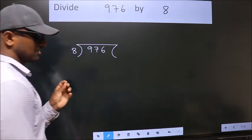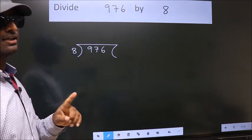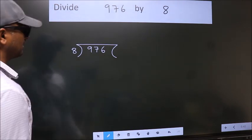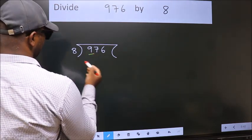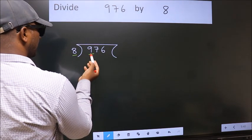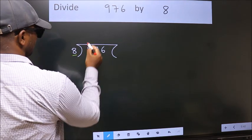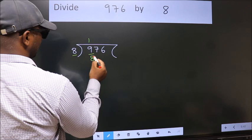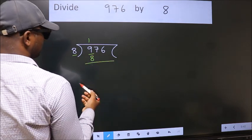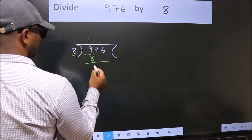This is your step 1. Next, here we have 9, here 8. A number close to 9 in 8 table is 8 once 8. Now, we should subtract. We get 1.